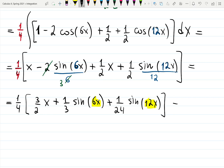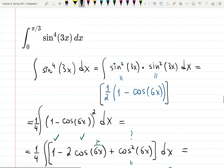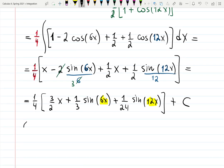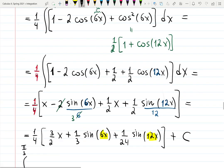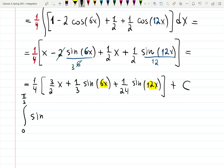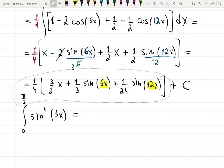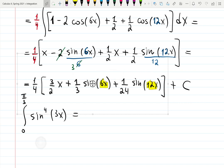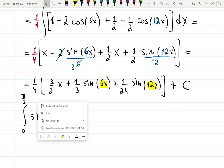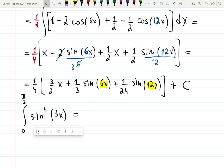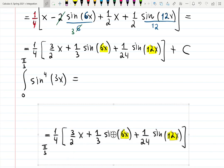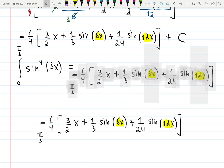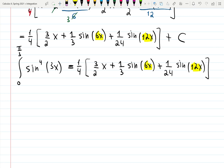So now I just need to remember that actually we started with a definite integral from zero to π over 3. Integral from zero to π over 3, sin⁴(3x), will be all of this. But I will have to plug the top minus the bottom, remember for the definite integral. So we'll have a bar from zero to π over 3.